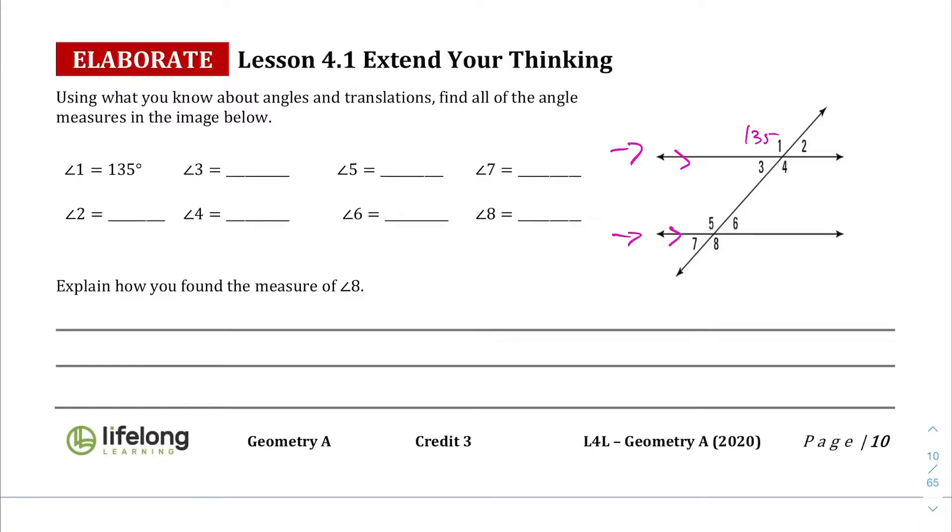Because angles 1 and 4 are vertical angles, angle 4 is 135 degrees. Then angles 1 and 2 are a linear pair and they are supplementary, which means that angle 2 is 45 degrees. And angles 2 and 3 are vertical from each other, so angle 3 is 45 degrees.